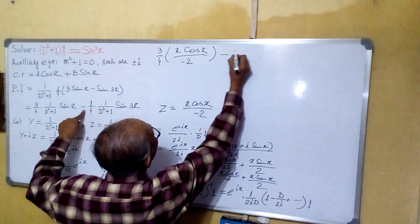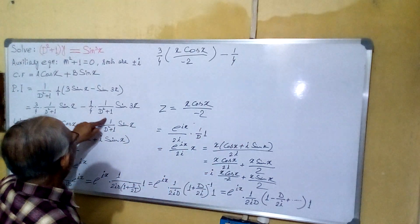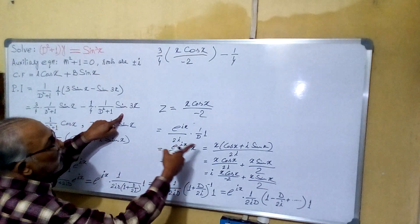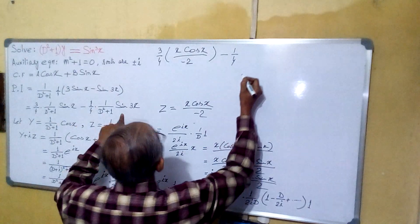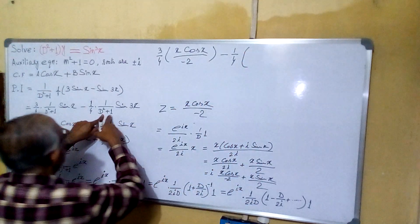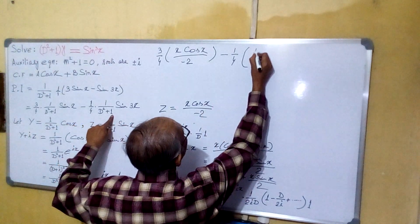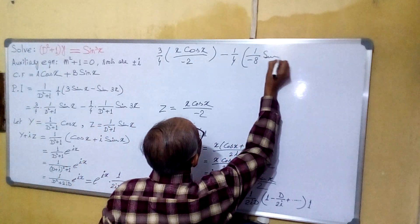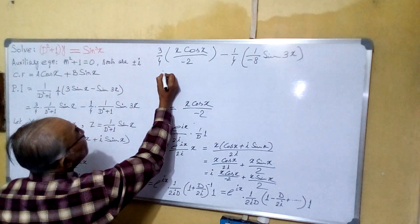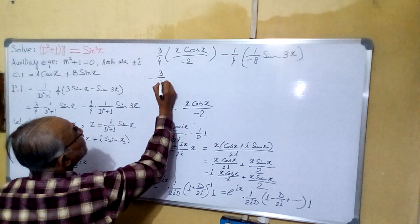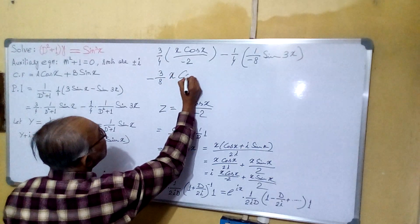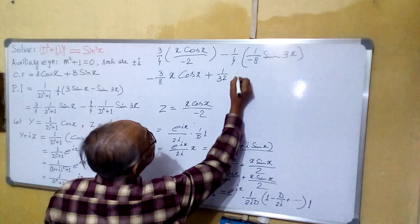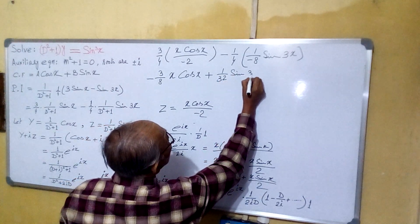Now combining both parts of the particular integral: −(1/4) · 1/(D² + 1) · sin 3x, where we already found 1/(D² + 1) · sin 3x = −(1/8) sin 3x, so −(1/4) × (−1/8) sin 3x = (1/32) sin 3x. The full particular integral is: −(3/8) x cos x + (1/32) sin 3x.